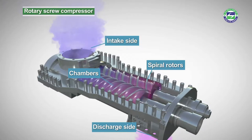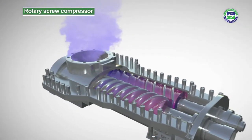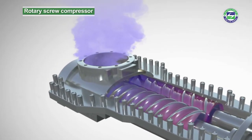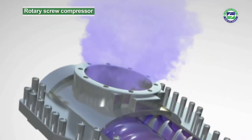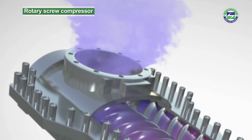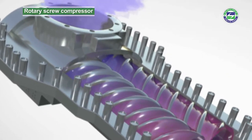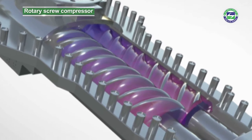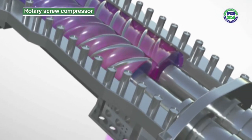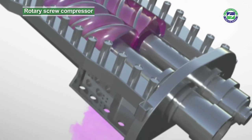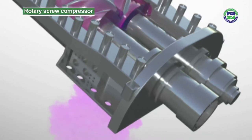Rotation causes the chambers to move from the suction or intake side to the compression or discharge side. These chambers are connected to the suction nozzle via ports; as the chambers enlarge, they are filled with air flowing in through the nozzle. The rotor transports the gas towards the discharge side where the chamber shrinks and the retained air is compressed. Once the air is compressed, the chamber reaches another port connected to a discharge nozzle.